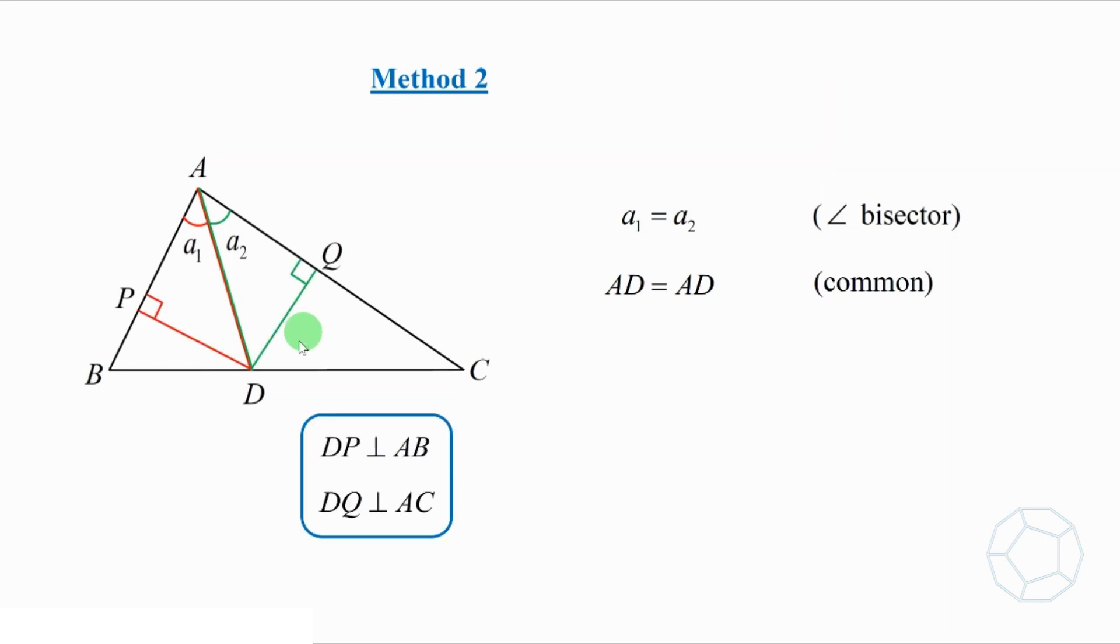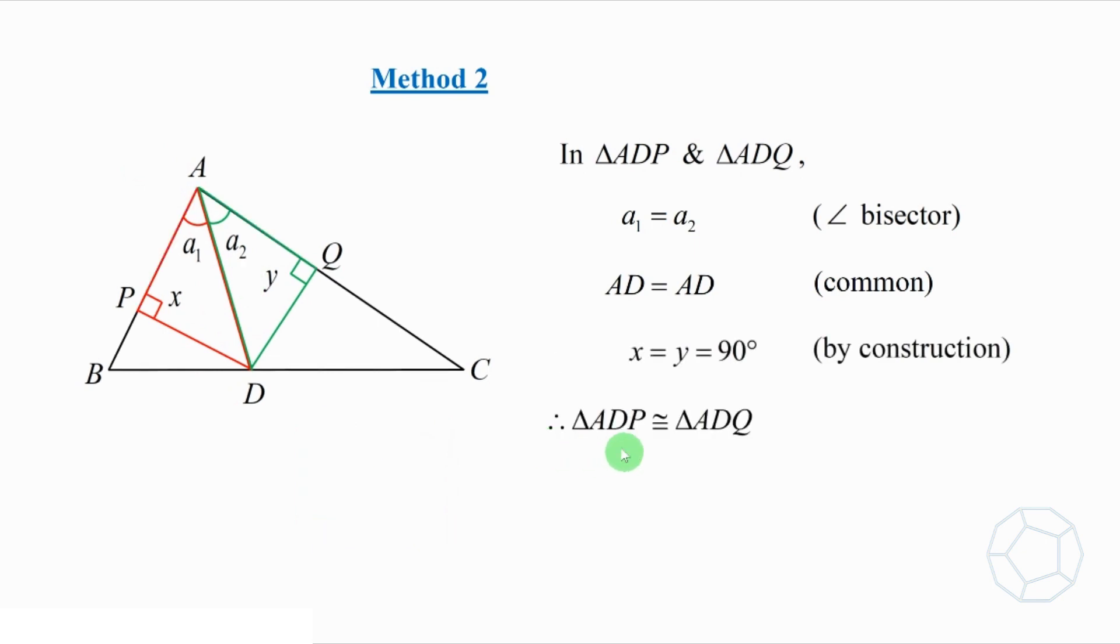Let's construct the two heights from the point D. We shall call them DP and DQ. Now, we focus on the two smaller triangles ADP and triangle ADQ. Then, we have the two angles X and Y, both are 90 degrees. So we can conclude that triangle ADP and triangle ADQ are congruent. The reason is AAS. As a result, the two heights DP and DQ are equal, as they are the corresponding sides of congruent triangles.